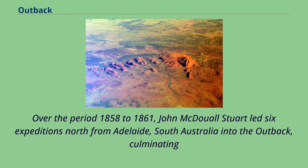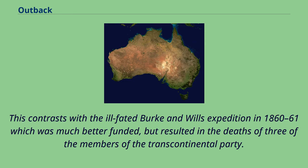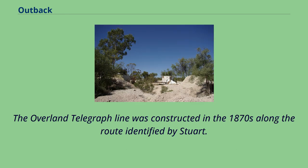Over the period 1858–1861, John McDouall Stuart led six expeditions north from Adelaide, South Australia into the outback, culminating in successfully reaching the north coast of Australia and returning without the loss of any of the party's members' lives. This contrasts with the ill-fated Burke and Wills expedition in 1860–61, which was much better funded, but resulted in the deaths of three members of the Transcontinental Party. The Overland Telegraph Line was constructed in the 1870s along the route identified by Stuart.